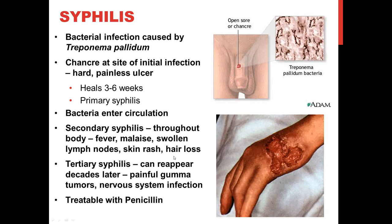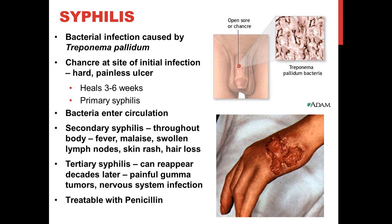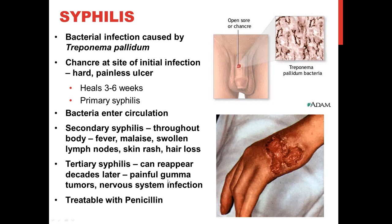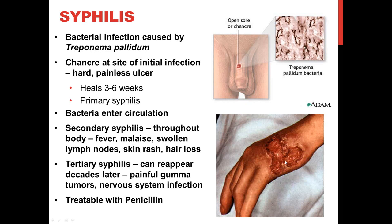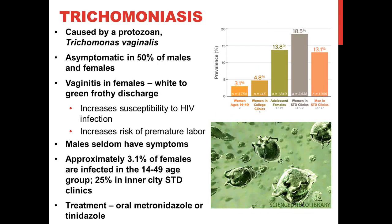Your immune system generally wipes out most of the bacteria, but some survive and go dormant for very long periods of time. Ten, twenty, thirty years down the road you can develop tertiary syphilis — the third stage. This is where people can go blind and go crazy. They also get nasty gummy tumors called gumma tumors on the skin or even on internal organs. Thankfully, we don't see many cases of tertiary syphilis in the United States anymore, but you may encounter patients during your careers who have this third stage.